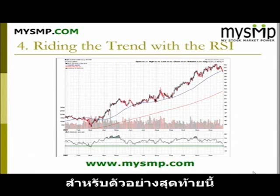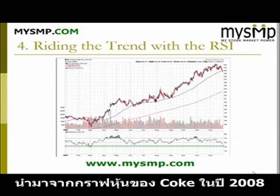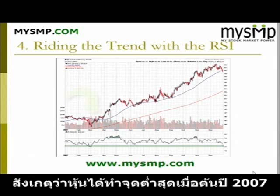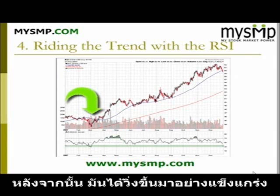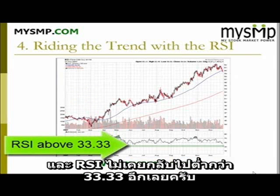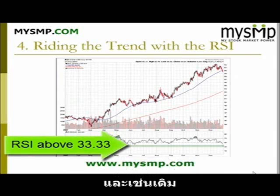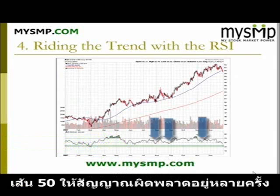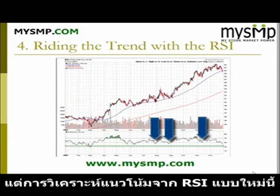The last example we have here is from the 2007 chart of Coca-Cola. Notice how once the stock bottomed in early 2007, it experienced a strong move higher and the RSI never broke 33.33 to the downside. Again, the 50 line was violated on numerous occasions, but this modified method of monitoring the trend with the RSI held true.